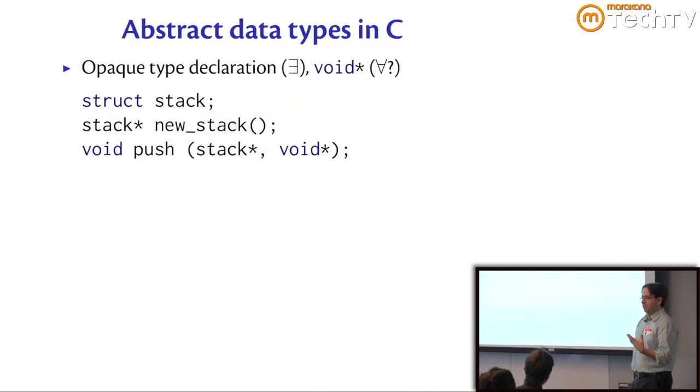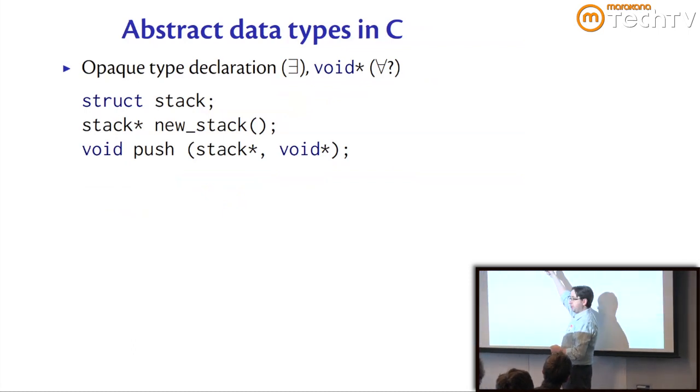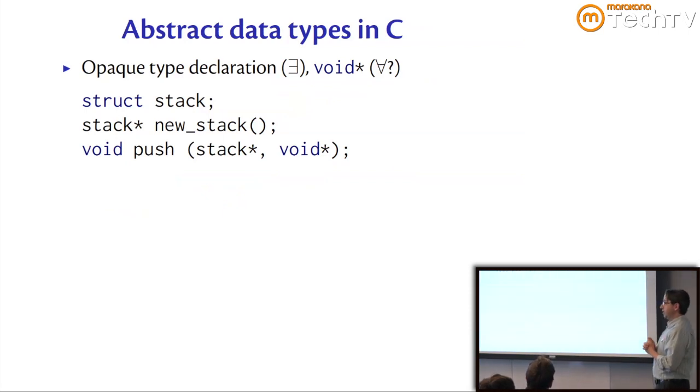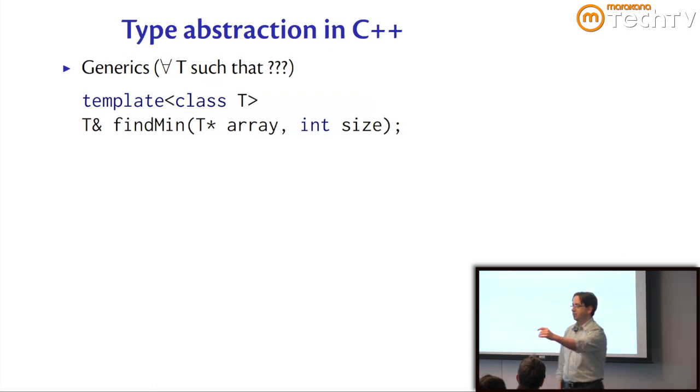What about abstraction and hiding? In pure C there's this pattern for doing abstract data types where you can declare an opaque type declaration. You just say struct stack and you don't say what it is, but that's okay as long as you only refer to pointers to it. So that's a kind of opaque type declaration, you could even say it's a fancy existential type. There's also this trick of using void star to say this is just some pointer and we don't care what it is, so generics work that way in C.